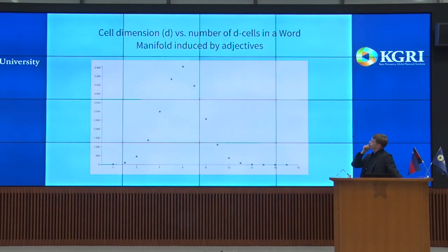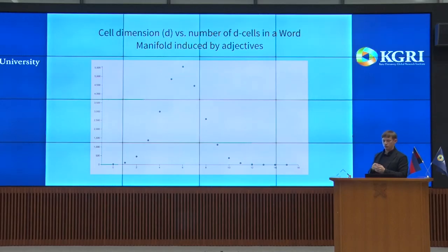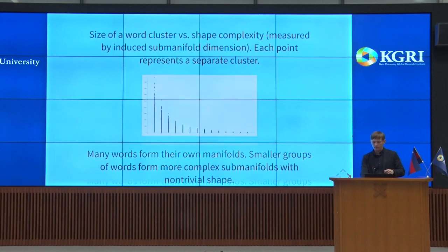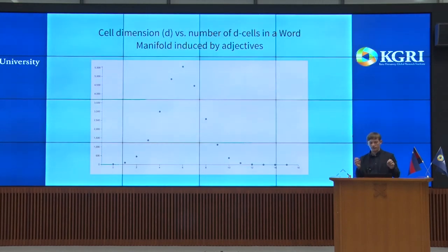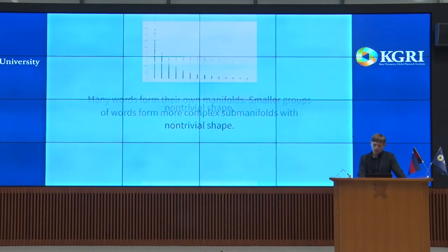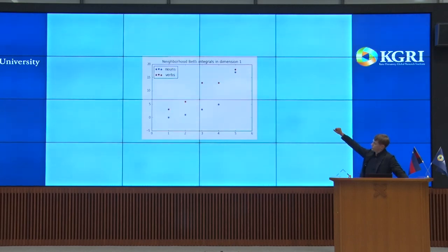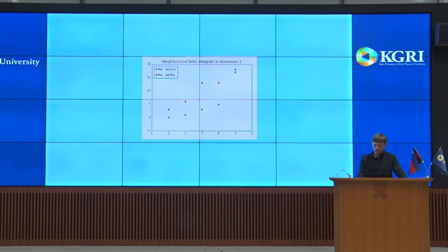Using something called relative homology, you can define the shape of words by taking a word out of the language, looking at the language without that word, deriving the manifold as if it didn't exist, and then comparing it to the language with the word. You get two different manifold shapes, and relative homology computes the difference between them — showing how that particular word contributed to the overall shape of the manifold. It turns out that different classes of words tend to have different shape complexities, and you can use homology theory to look at the vector embeddings of words and tell that they are different types carrying different types of information.